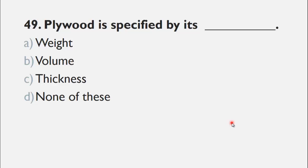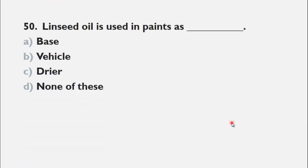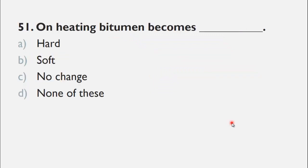MCQ number 50 is: Linseed oil is used in paint as a ___. The choices are A) base, B) vehicle, C) dryer, and D) none of these. We know that linseed oil is a common vehicle used in paint, so the right choice for this question is B, vehicle.